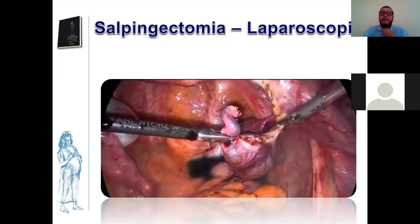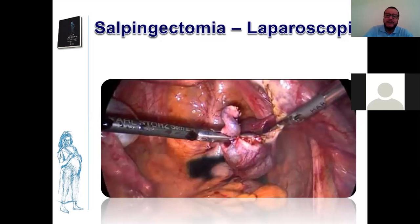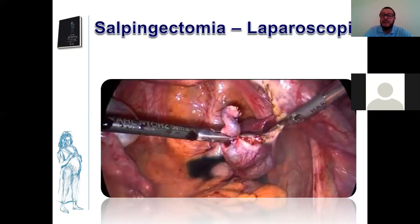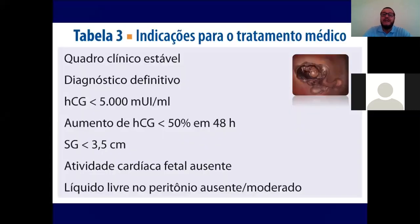Aqui mostrando uma salpingostomia videolaparoscópica: a incisão da trompa e a aspiração do seu conteúdo, onde se faz o deslocamento e retirada do ovo. Esse local ficará com uma cicatriz — existindo cicatriz, o risco de nova prenhez ectópica é muito grande. Aqui mostrando uma salpingectomia videolaparoscópica: retirando a trompa através da videolaparoscopia. Você pode fazer esses procedimentos também pela laparotomia. Tirar a trompa do paciente é salpingectomia.